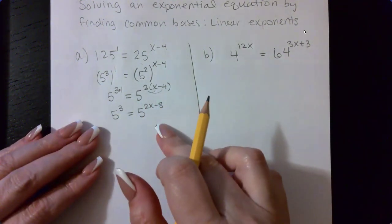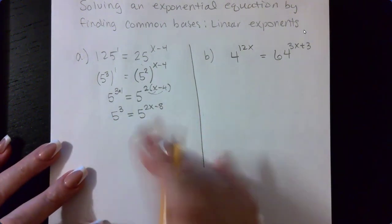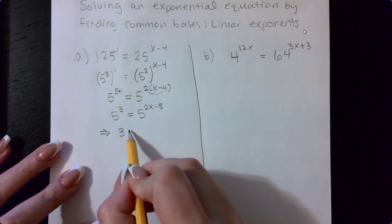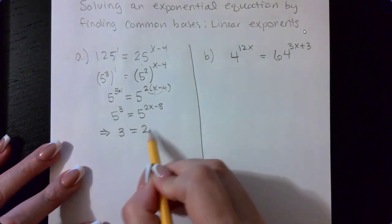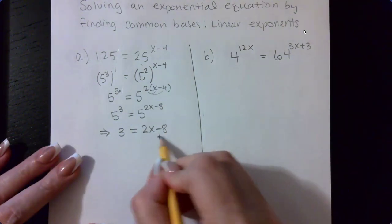So I get five raised to the third power equal to five raised to the two X minus eight power. Now we can apply our one-to-one property because we have them written with the same base. Now that they have the same base, all I have to worry about is the top exponent, the left exponent equaling the right exponent. From here, you just go ahead and solve for X.